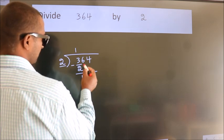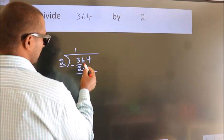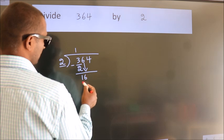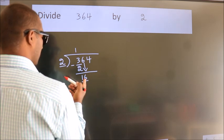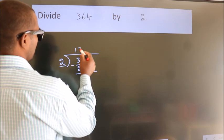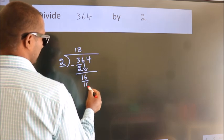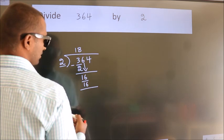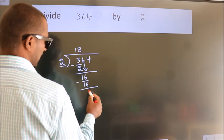After this, bring down the beside number. So 6 down, so 16. When do we get 16 in 2 table? 2 times 8 is 16. Now we subtract. We get 0.